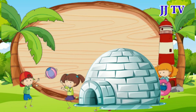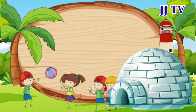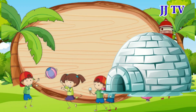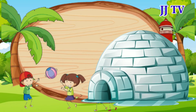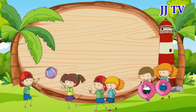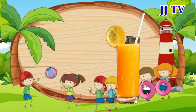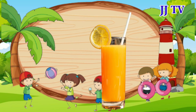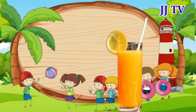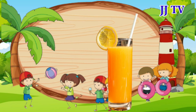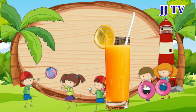I is for igloo, I, igloo, I, igloo, I, igloo. J is for juice, J, juice, J, juice, J, juice.